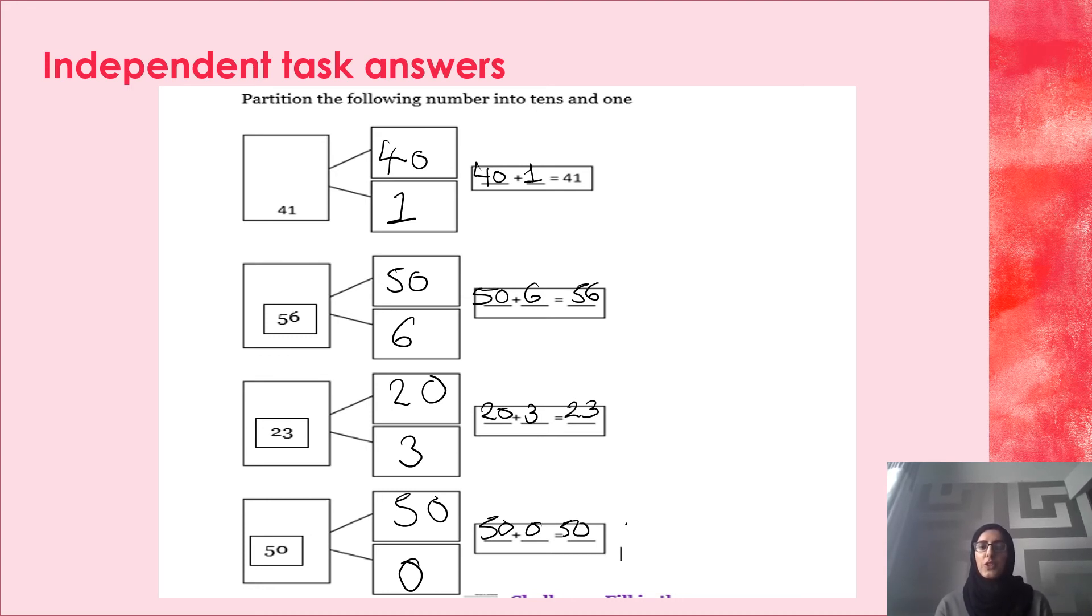Number 2. I know there are 6 ones. 5 tens make 50. And I put 50 add 6 together which makes 56. Then I've got the number 23. I have 3 ones. 2 tens which make 20. 20 add 3 equals 23.